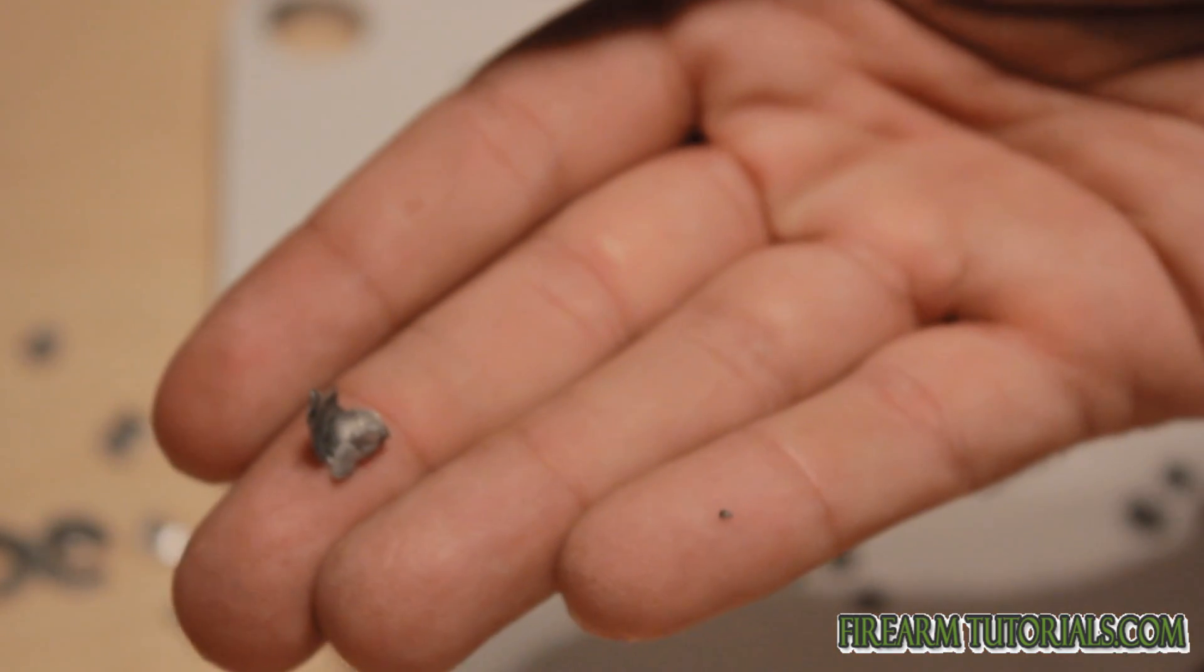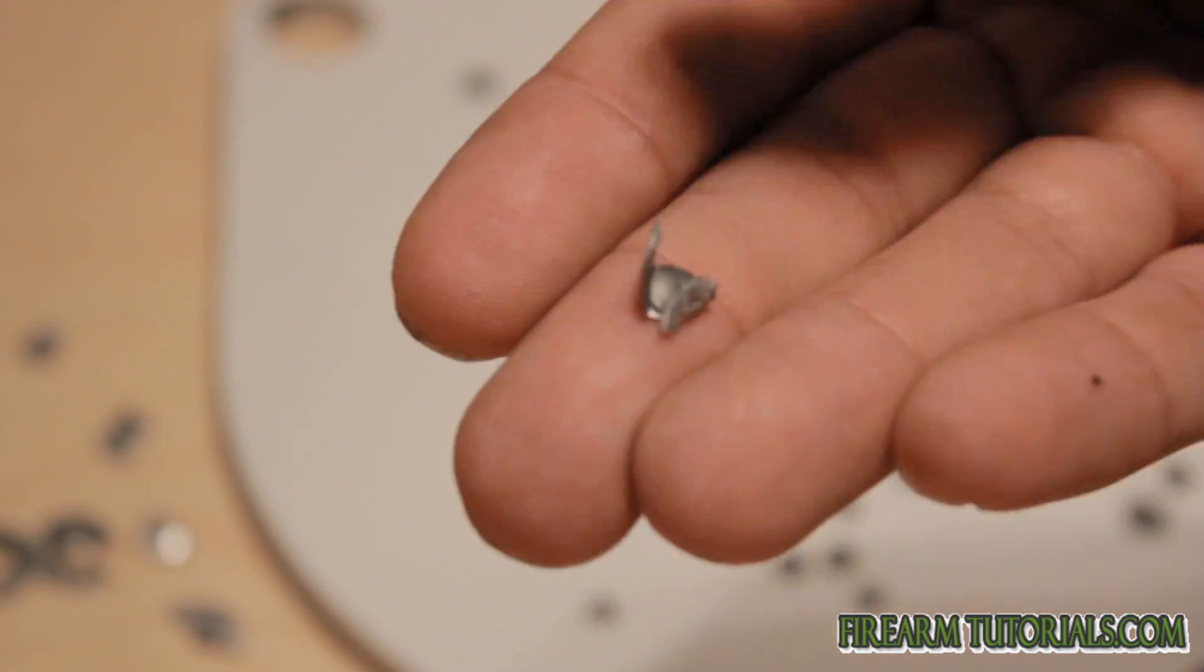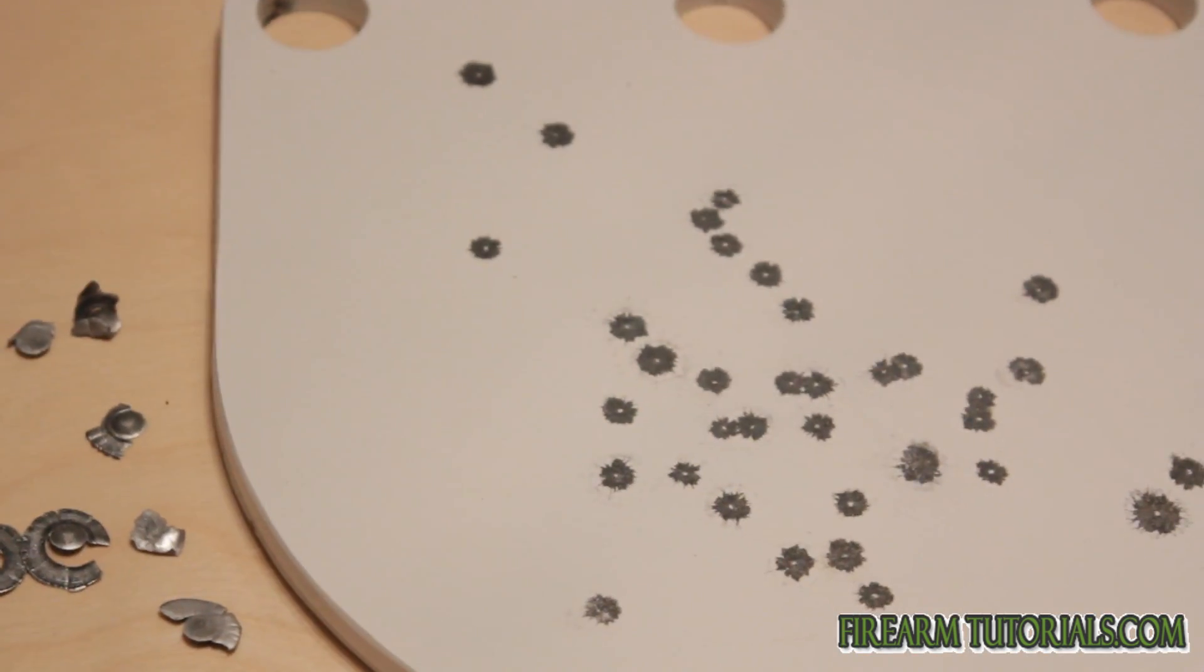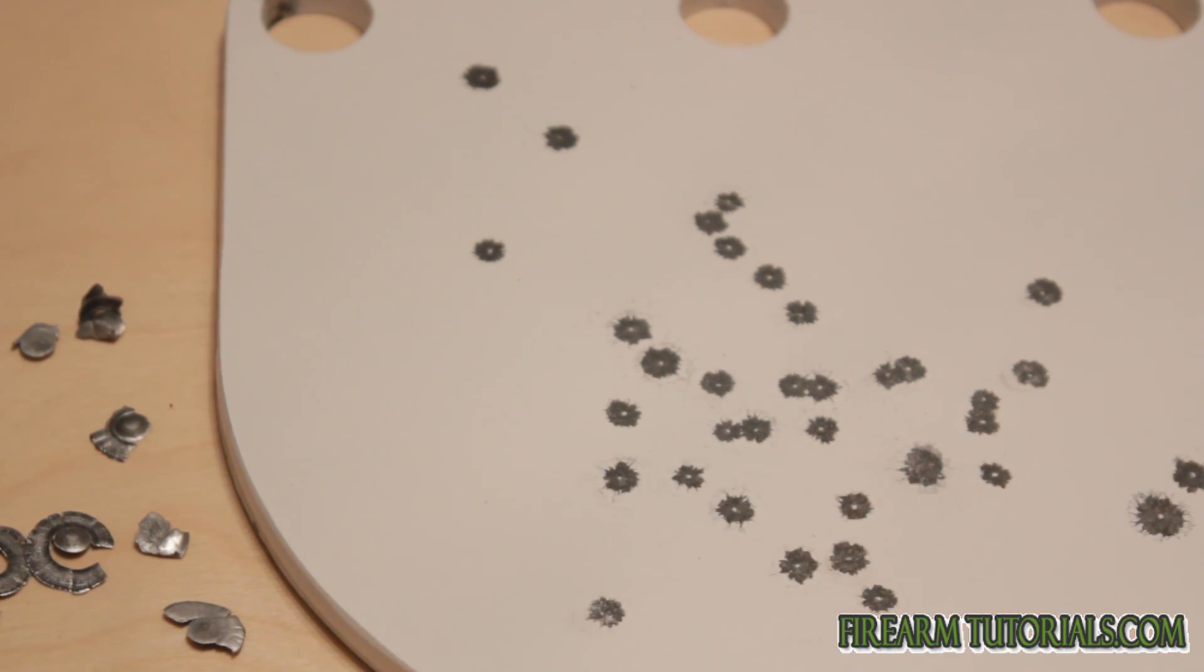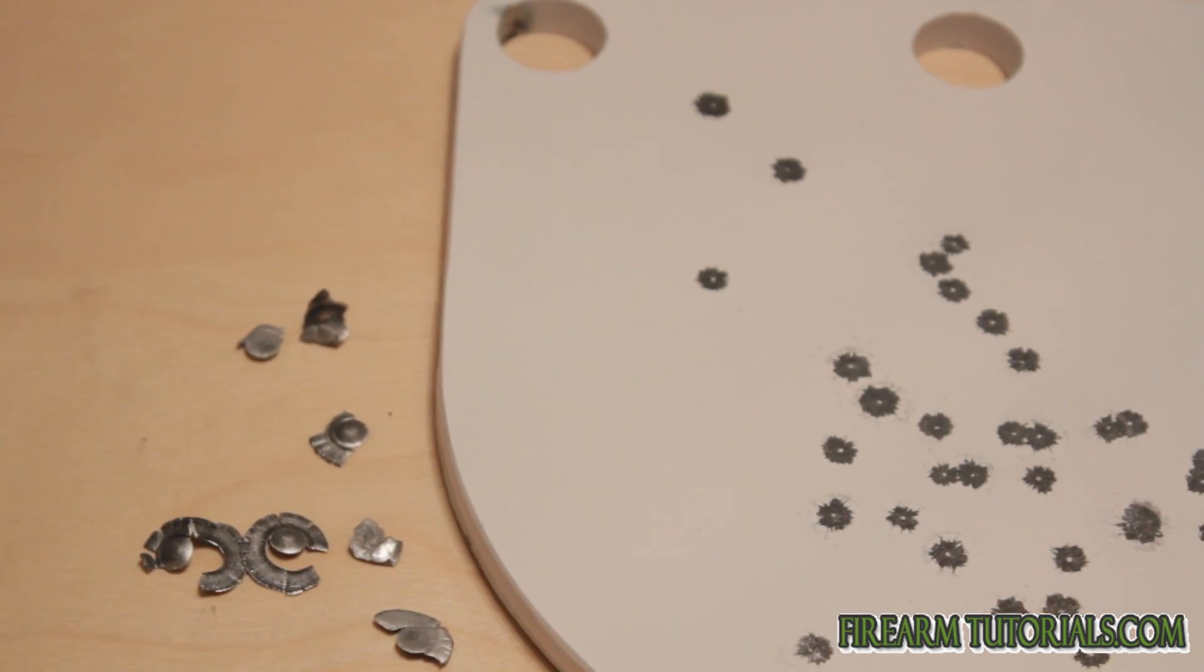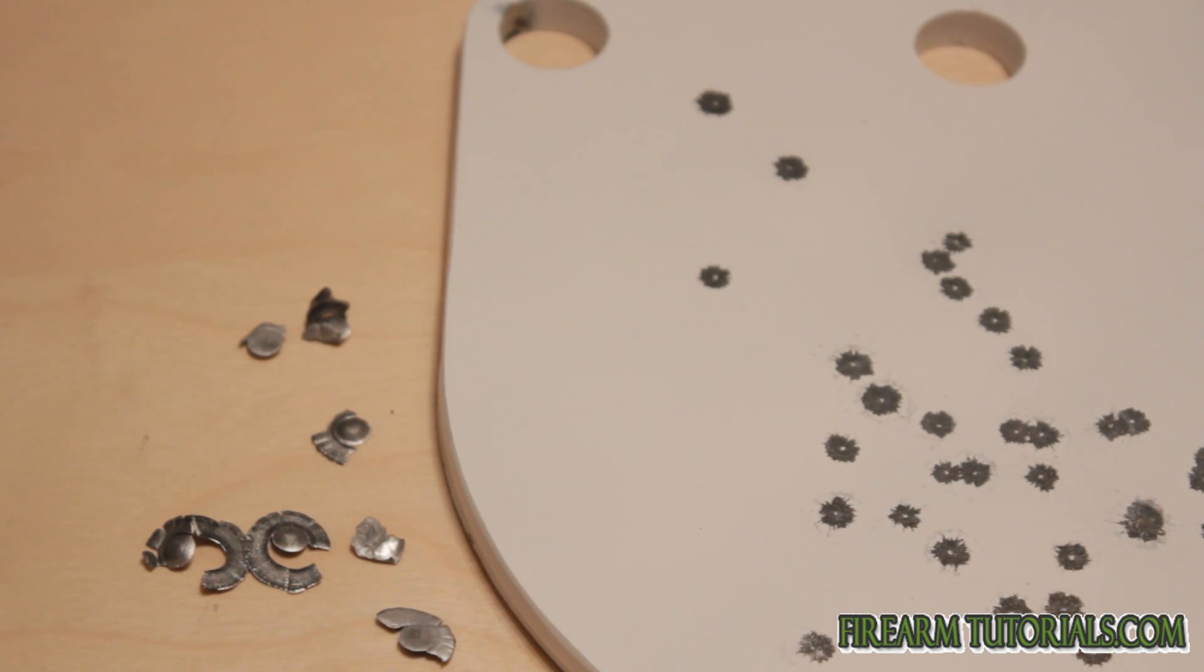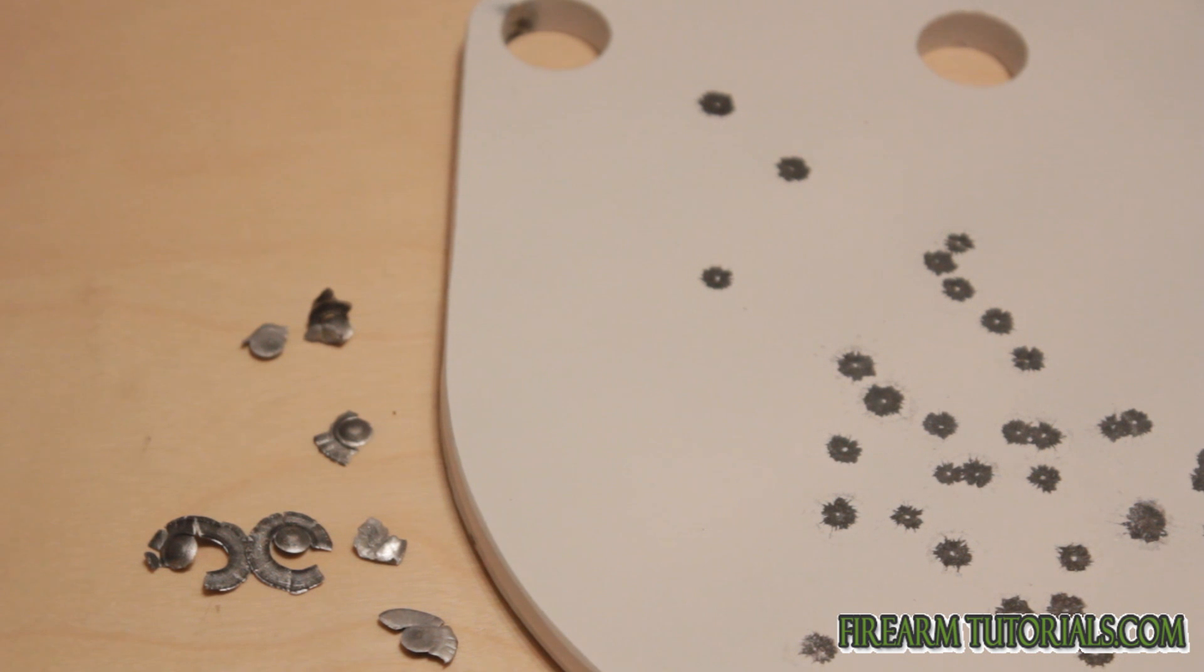I try to shoot exclusively lead bullets when I shoot at steel because as you can see, the lead flattens out really nicely. It's the jacketed stuff that you're going to potentially have problems with—the jacketing part bouncing back.